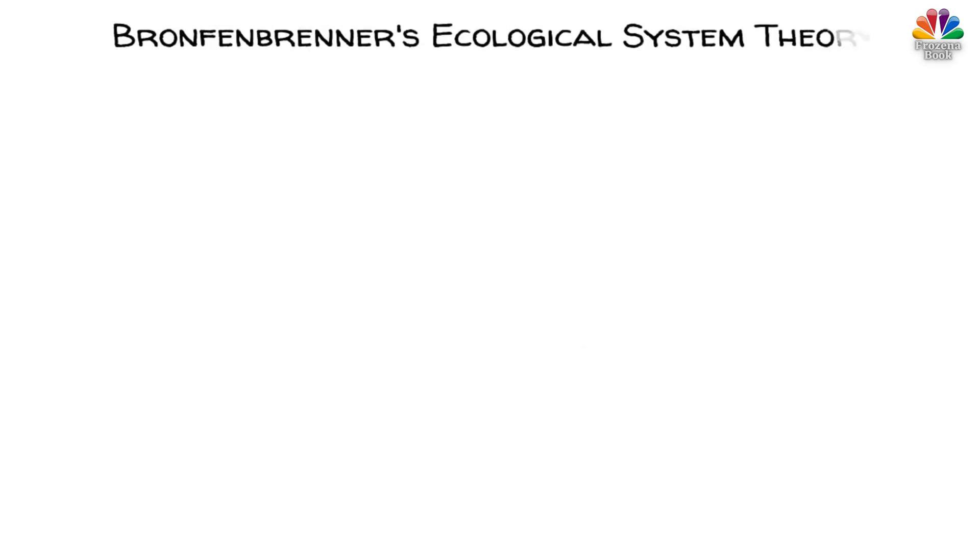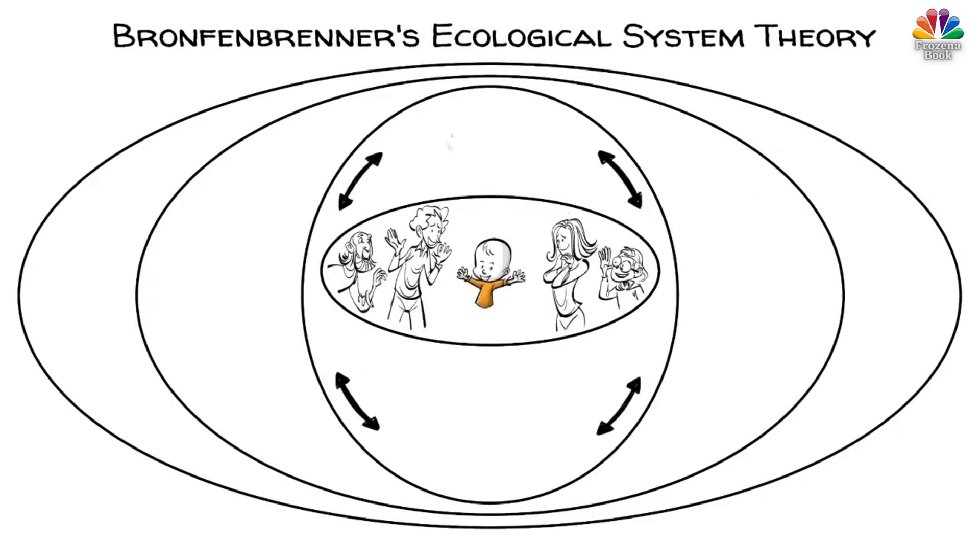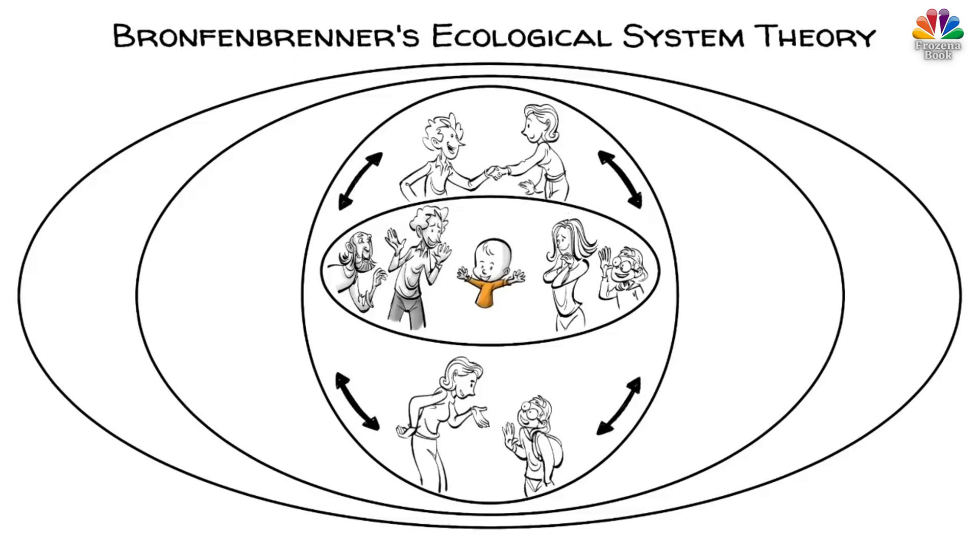Bronfenbrenner's ecological system theory conceives that a child is influenced by five ecological forces. First comes the microsystem of family and friends that affect the child directly. Second are the forces of the connections between the people around the child, parents with teachers and teachers with peers.